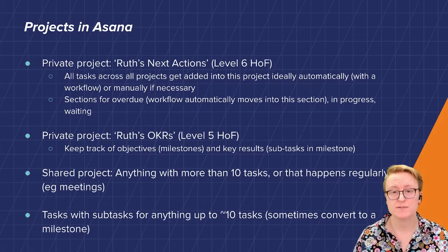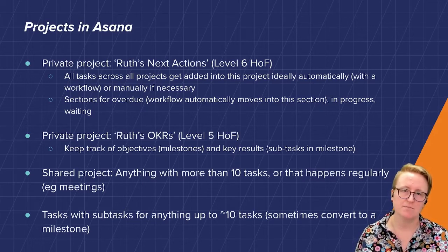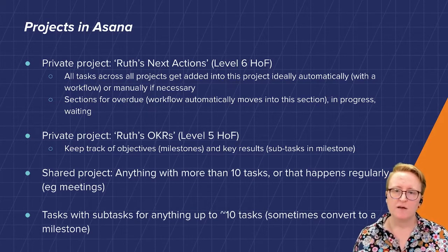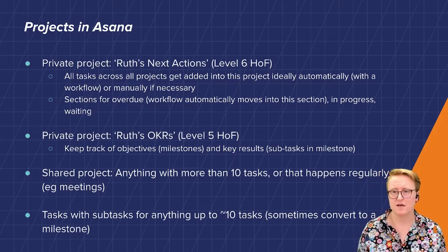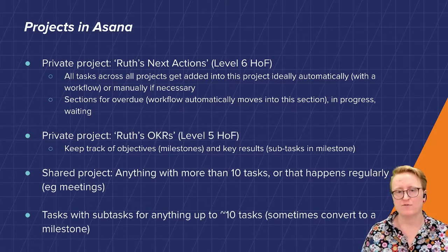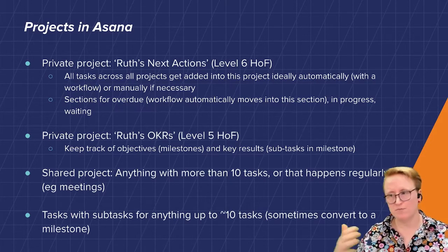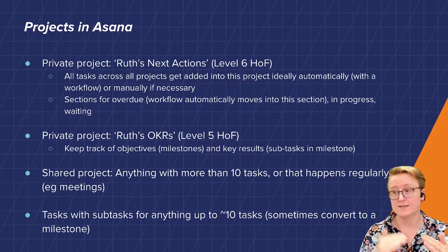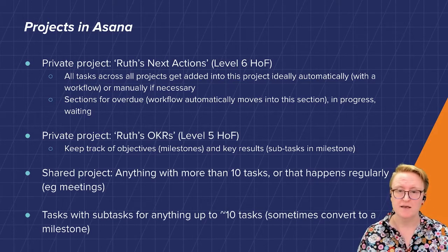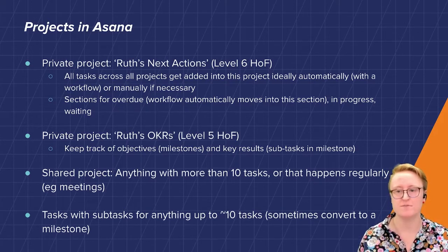I also have a private project for my OKRs — objectives and key results — which allows me to keep track of my objectives and key results. Objectives I create as milestones in that project; key results I create as tasks within that milestone. I create a project for anything that has more than about 10 tasks or anything that happens regularly, like meetings on a weekly or monthly basis. For anything with fewer than 10 tasks that's not going to roll on, I generally use a task with subtasks rather than creating a project — so that's not technically how David Allen says you should do things, but I just got project overwhelmed.